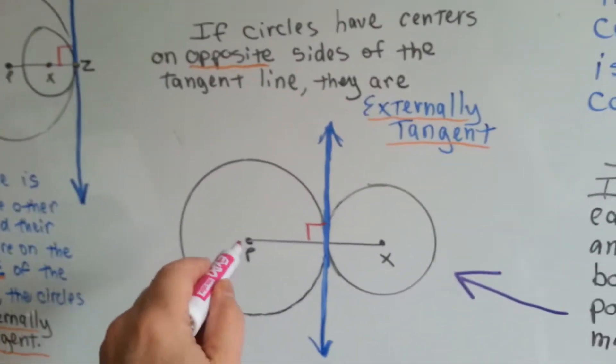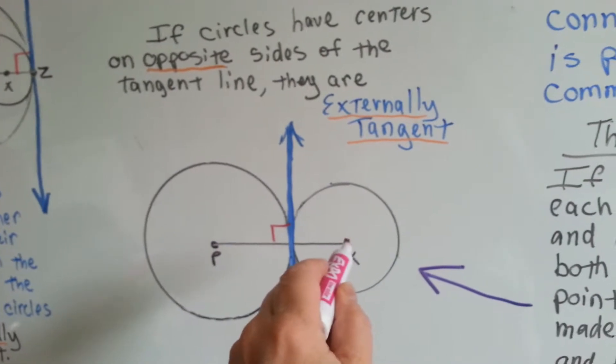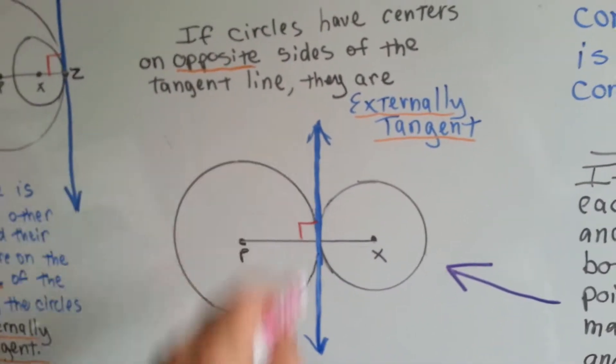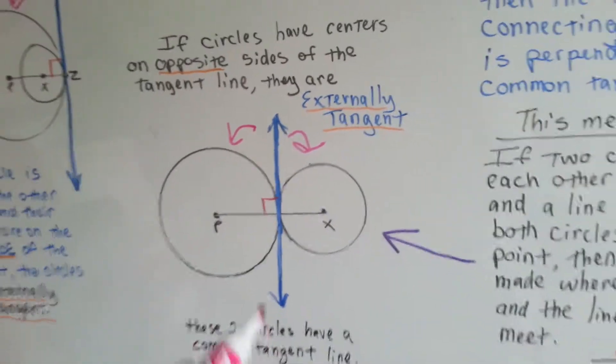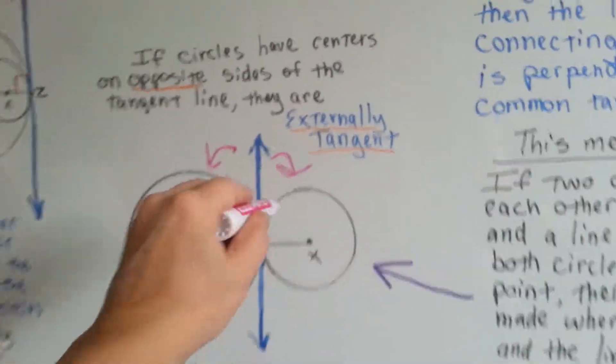Now, look at the center of this circle and the center of this circle. They are on opposite sides of this tangent line. This one's on this side, this one's on this side. That means they are externally tangent.